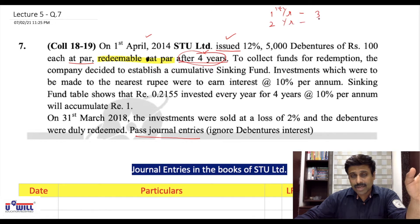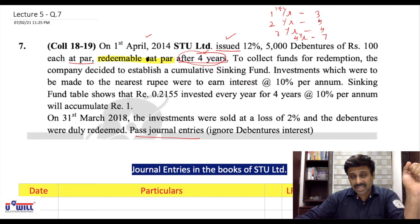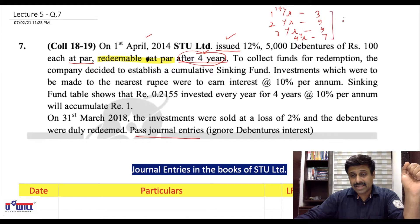In the fourth (last) year there are total seven entries to be passed. So 3 plus 4 is 7, plus 4 is 11, plus 7 is 18 — so 18 to 20 entries in all are to be passed in this question.